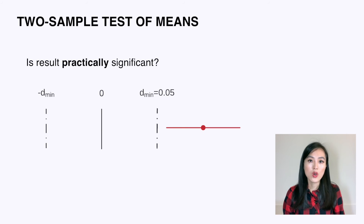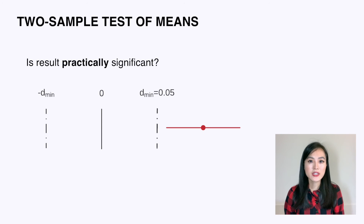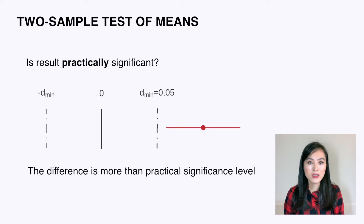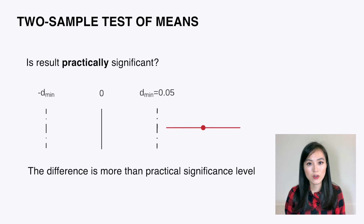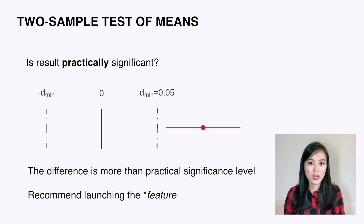Next, we construct the confidence interval of d. Similar to the previous example, we draw a diagram to compare the confidence interval with the practical significance boundary and zero. In this case, both ends of the confidence interval are greater than the practical significance boundary, so it's highly likely the difference between the two means exceeds the practical significance level. We would recommend launching the experiment.